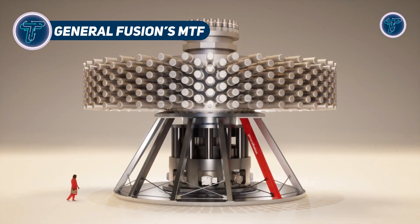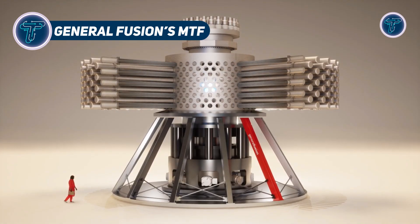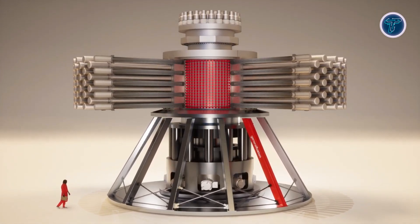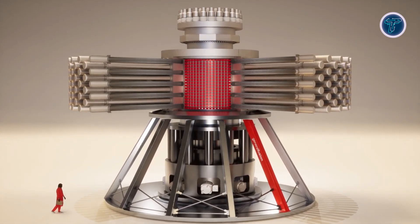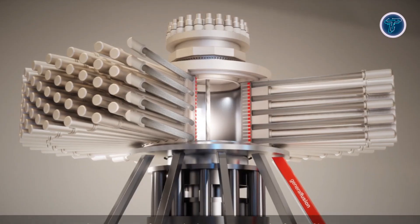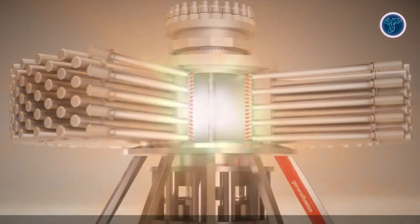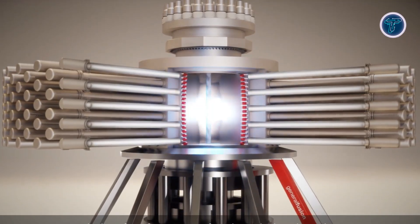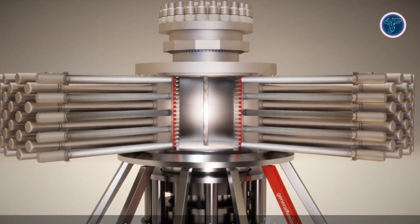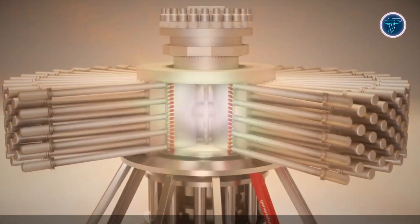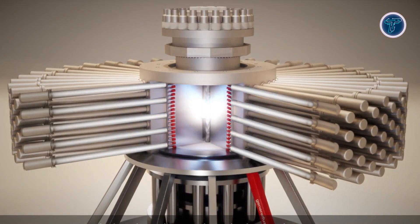General Fusion's MTF. General Fusion's Magnetized Target Fusion represents a promising path towards practical zero-carbon energy. This approach combines aspects of magnetic confinement and inertial confinement fusion using a magnetized plasma contained within a liquid metal-lined cavity. High-powered pistons compress the liquid metal, squeezing the plasma to extreme temperatures and pressures. The magnetized plasma stays insulated during compression, preventing contact with the vessel walls, while liquid lithium absorbs neutrons and transfers heat.